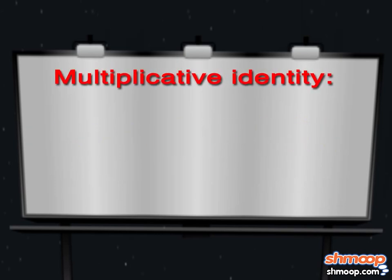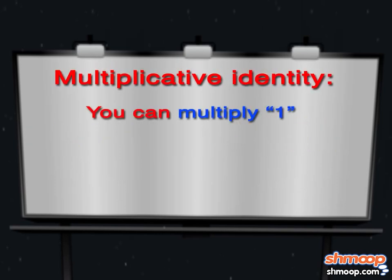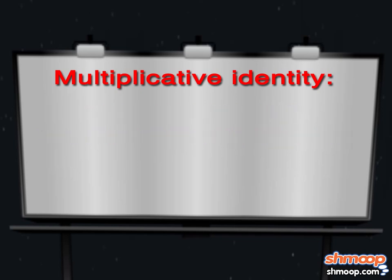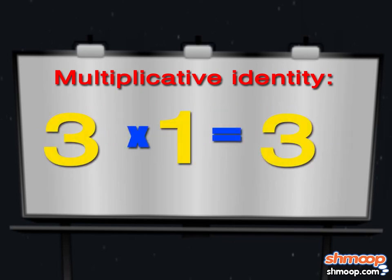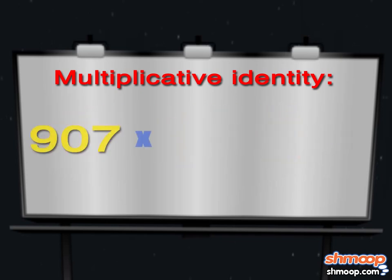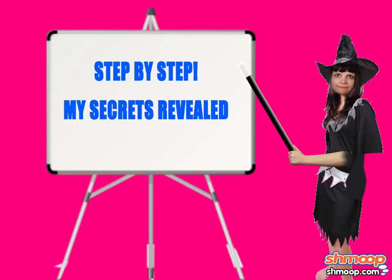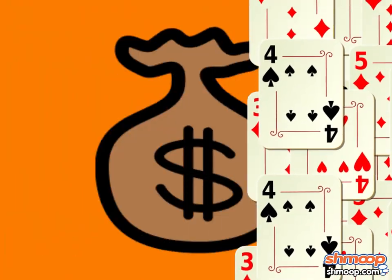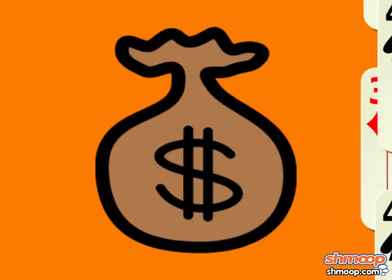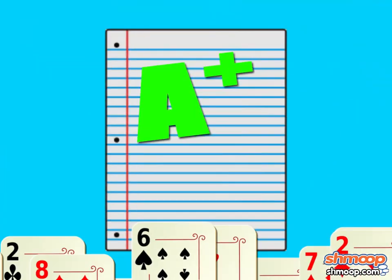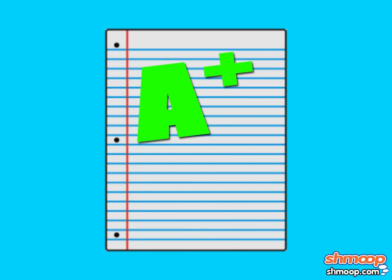Multiplicative identity means you can multiply 1 by any number and get its identity. 3 times 1 equals 3. 907 times 1 equals 907. And it's as easy as that. A magician never reveals her secrets, but a mathemagician does. You might not be able to make any money doing these tricks or find a supermodel partner, but they might make math class a little easier.